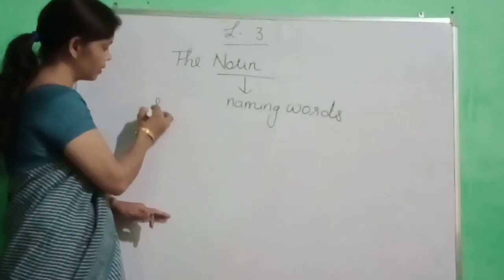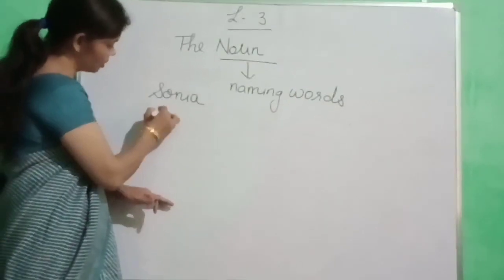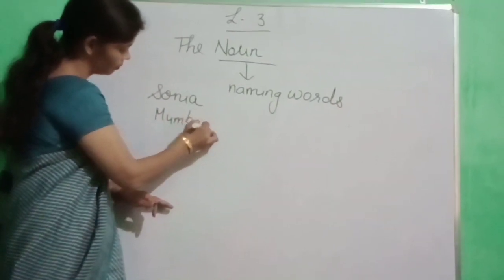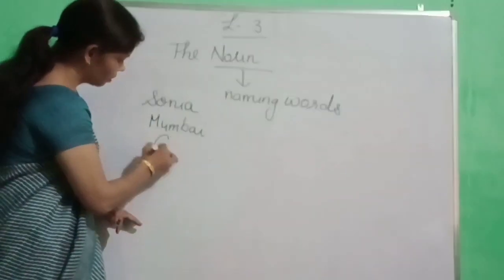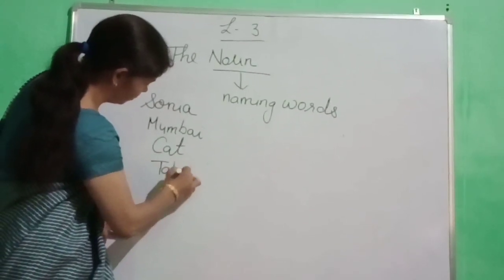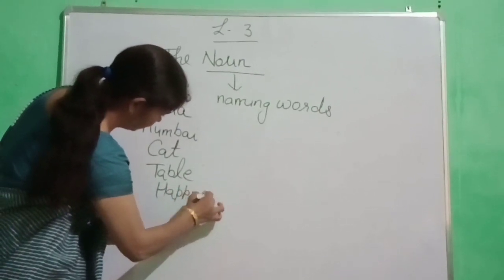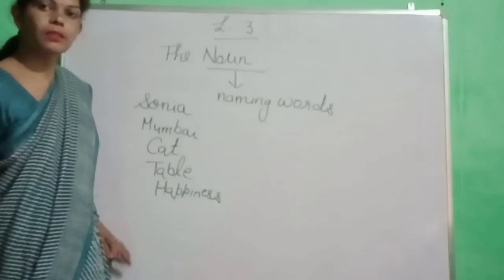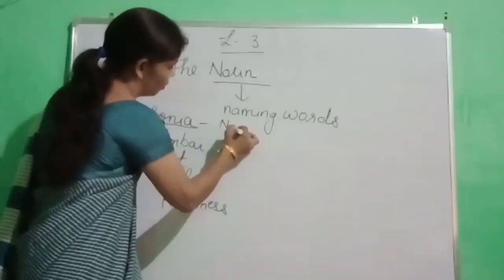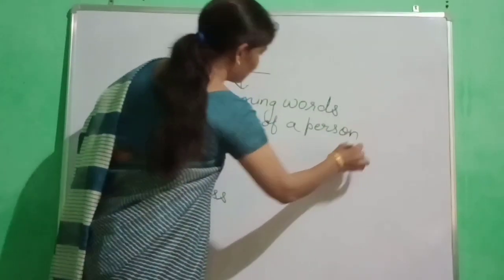Dear students, look here. I am writing here: Sonia. Clear? Next is Mumbai. Clear? Next is cat. Next is table. Next is happiness. So dear students, our first is Sonia. Sonia kya hai? Name hai na? Name of a person. Kisi person ka name hai na, Sonia?